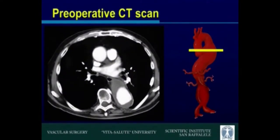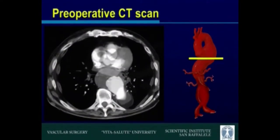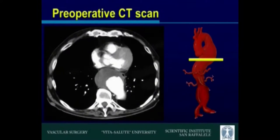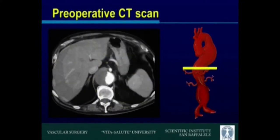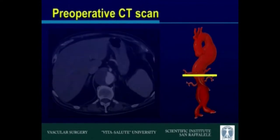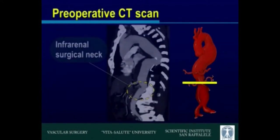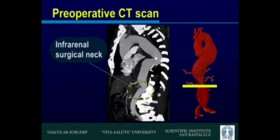Preoperative CT scan shows the extension of the aneurysm that involves the thoracoabdominal aorta. An infrarenal aortic neck is recognized.